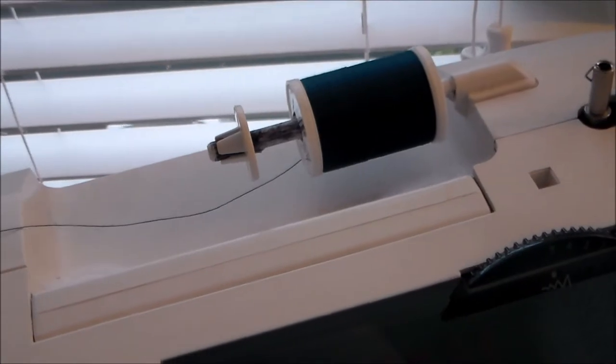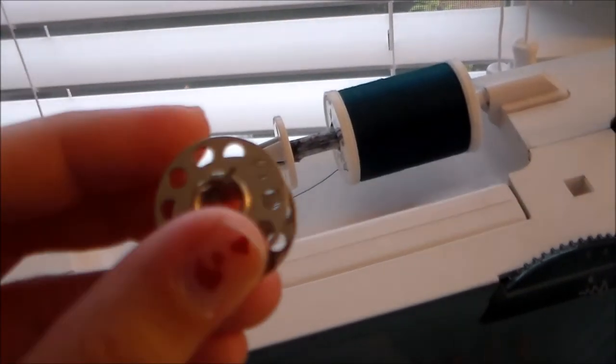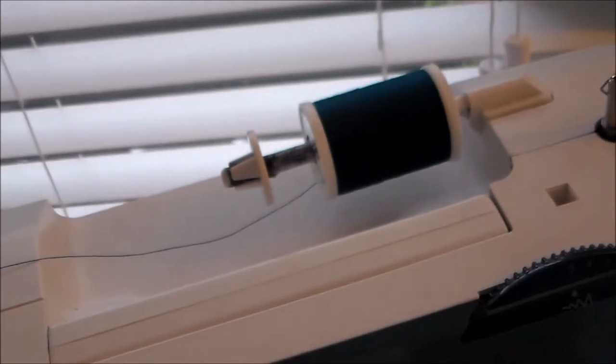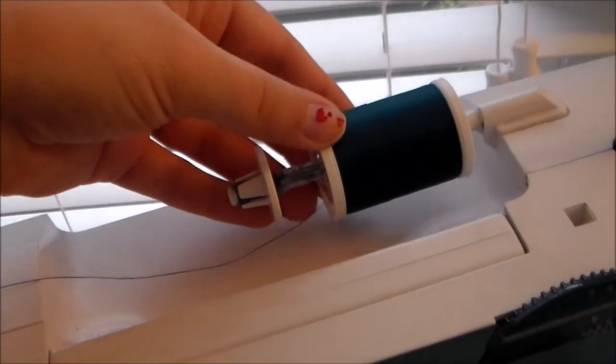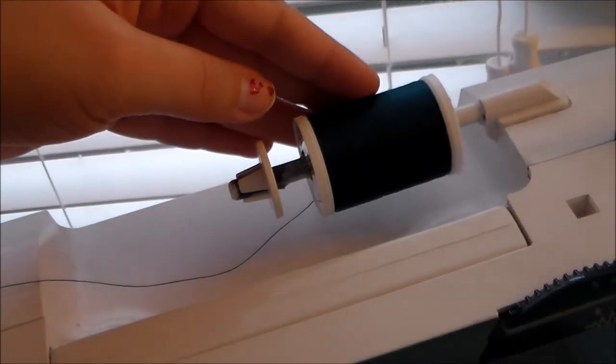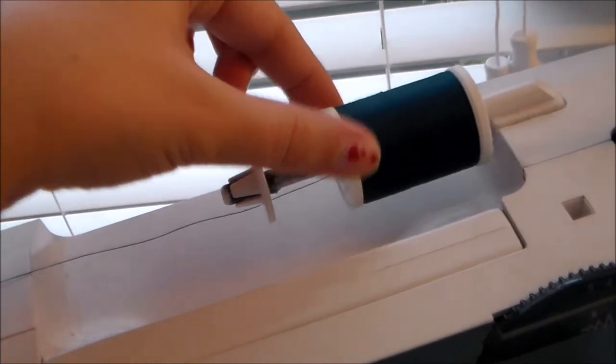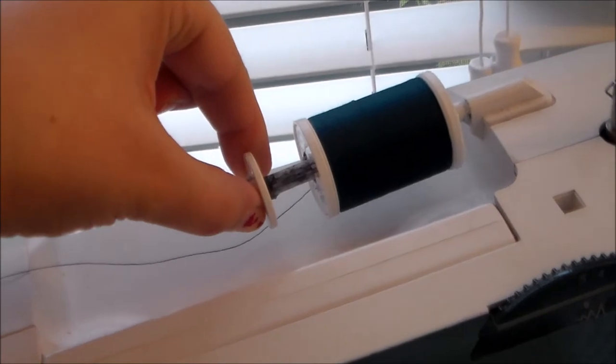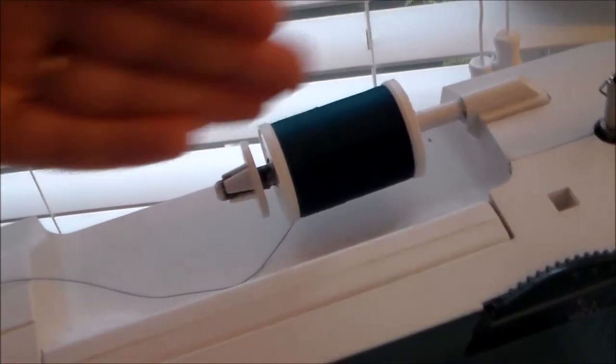When you first get your bobbins they're going to be empty, so you're going to have to fill them with whichever thread color you need for your project. You're going to do that by taking your base spool of thread and you're going to slide it onto the top of the machine. Then there should be a little stopper to keep it from flying off.